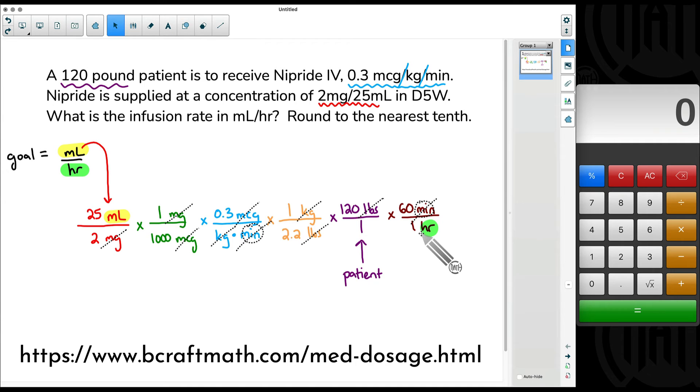We are ready to grab our calculator, and we're going to type all of this in at one time, and we're going to press equals one time. This is how I always do my med dosage problems using dimensional analysis. So what does all this junk equal to? What we do is we multiply all of our top numbers, and we're going to divide by all of our bottom numbers all at one time. We're going to press equals once.